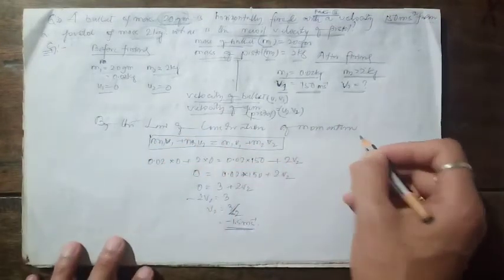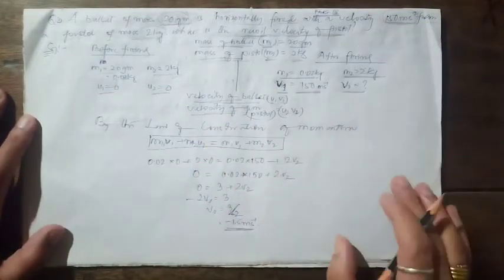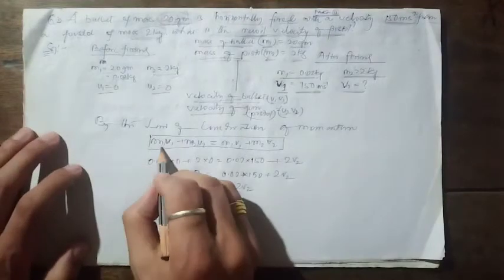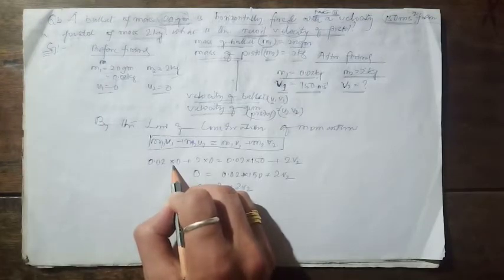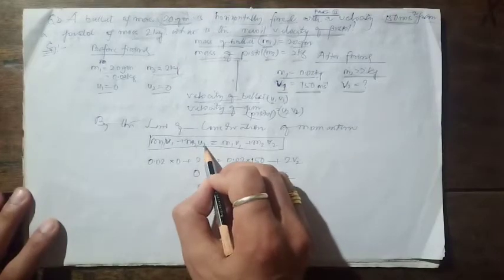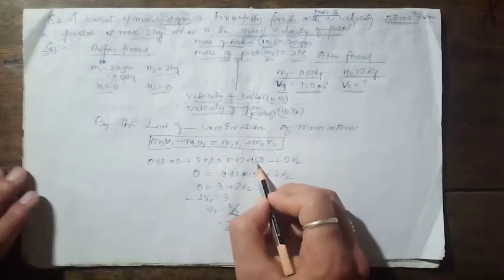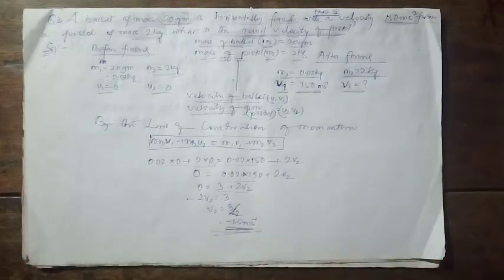Substituting all values: m1 = 0.02 kg, u1 = 0, m2 = 2 kg, u2 = 0, v1 = 150 m/s. The left-hand side equals 0. Simplifying, we get v2 = −1.5 m/s. The negative sign means the gun moves in the backward (negative) direction — opposite to the bullet — which is the recoil direction.